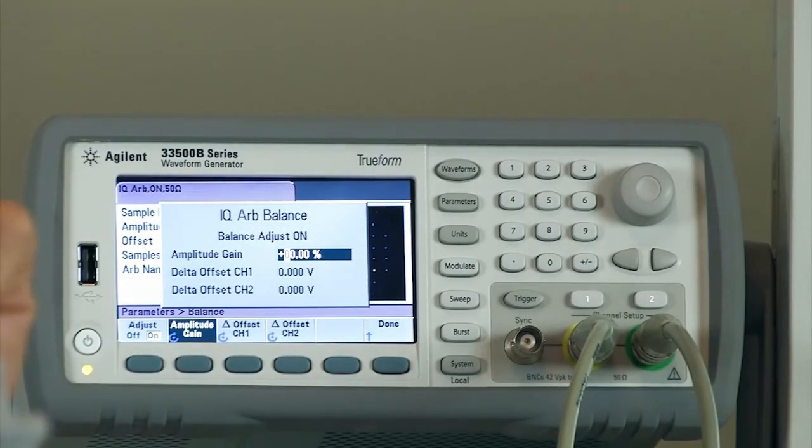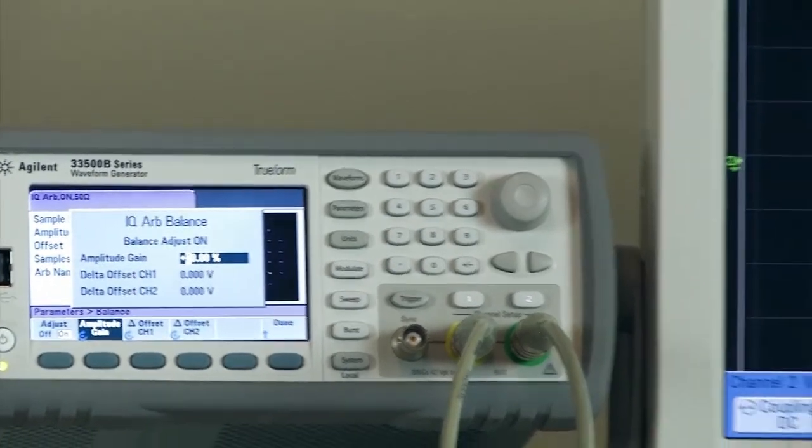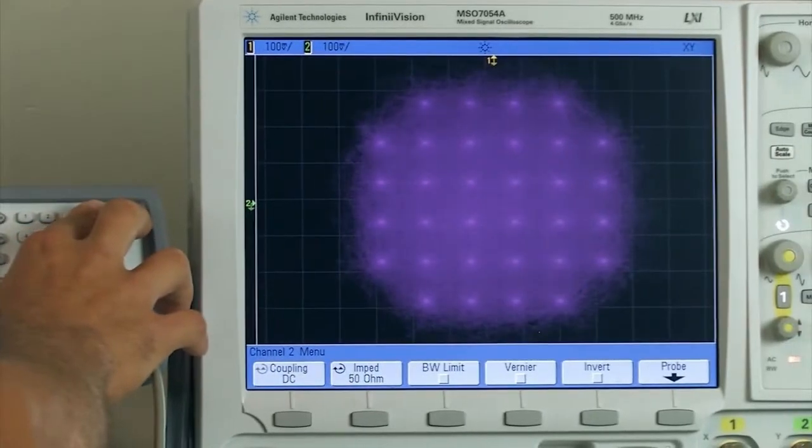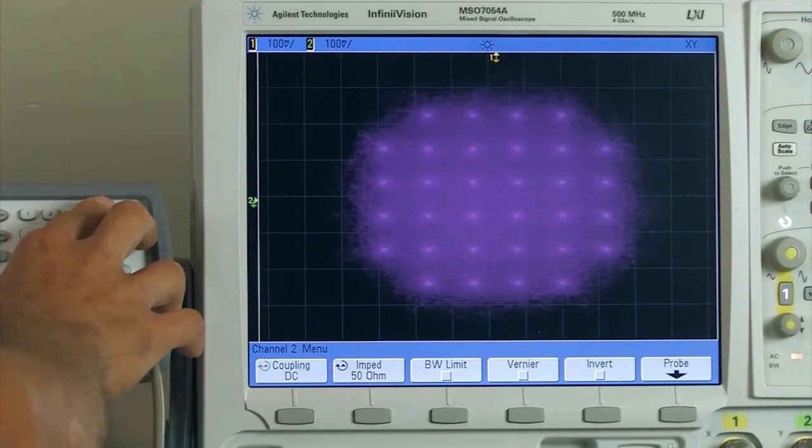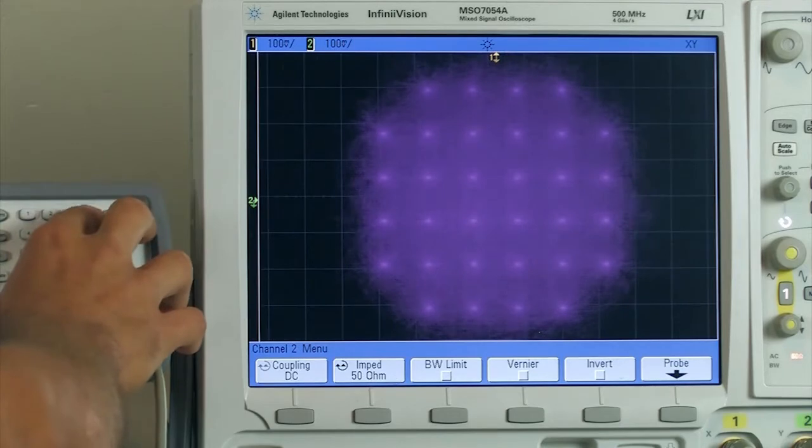Let's look at an example where I adjust the gain and see its effect on the signal on the scope. So here I'm adjusting the gain up, positive gain, and we can see the effects on the 32QAM signal. And then let me adjust it down or negative. So here we're adjusting to see negative gain.